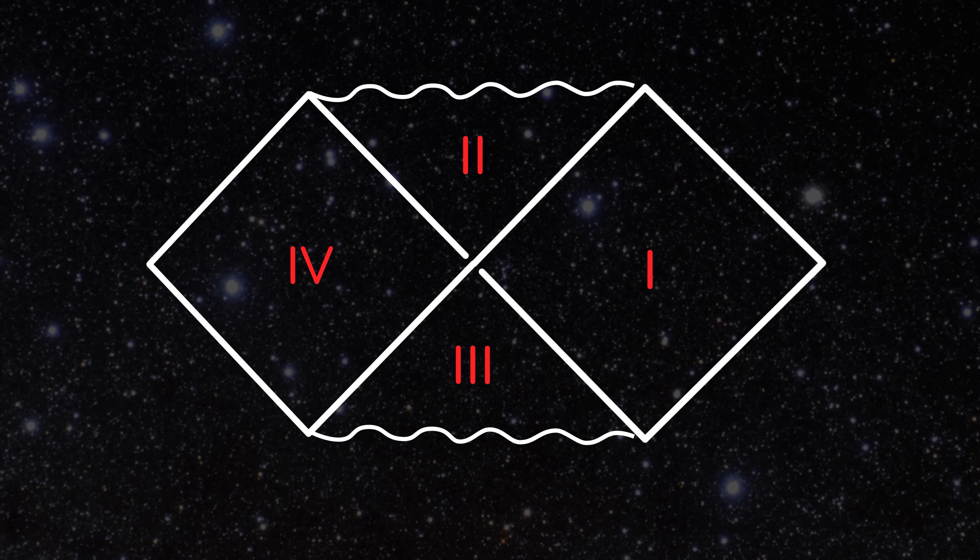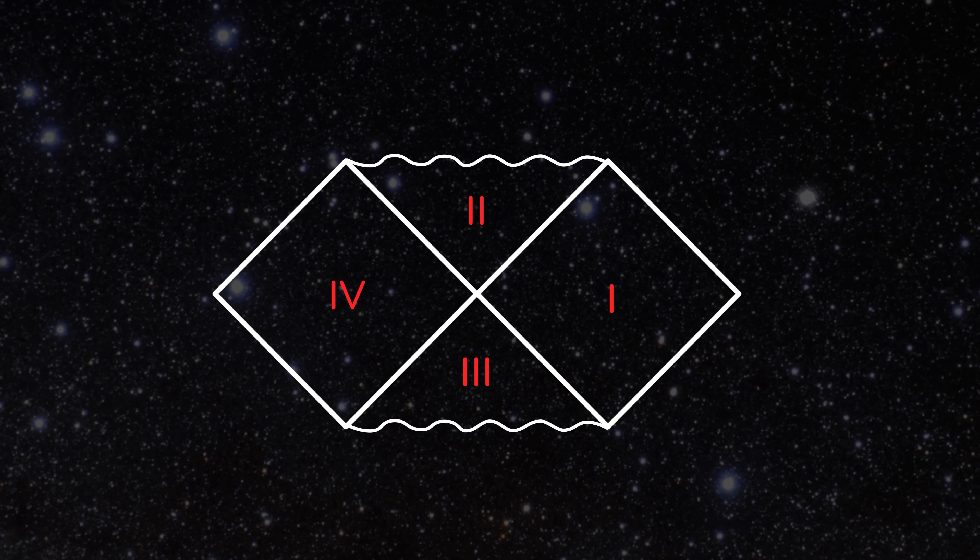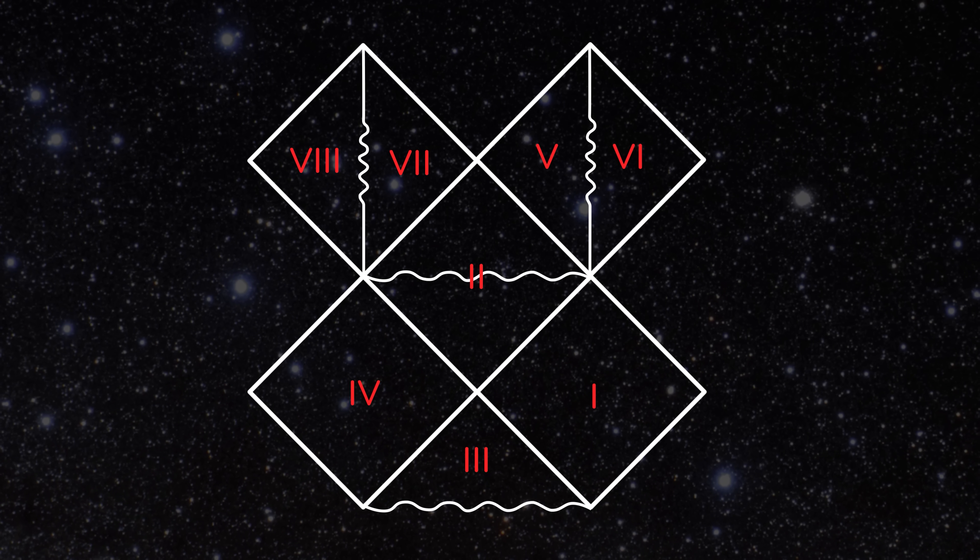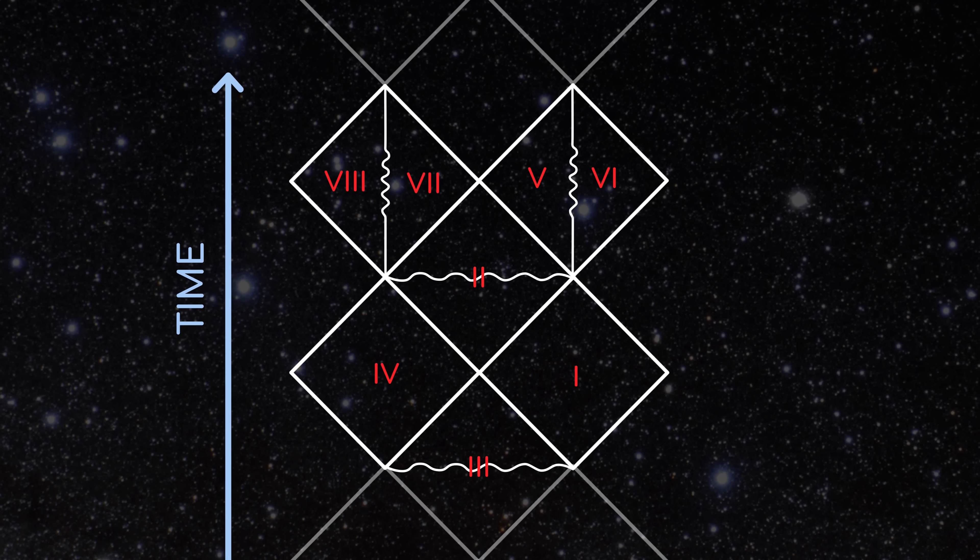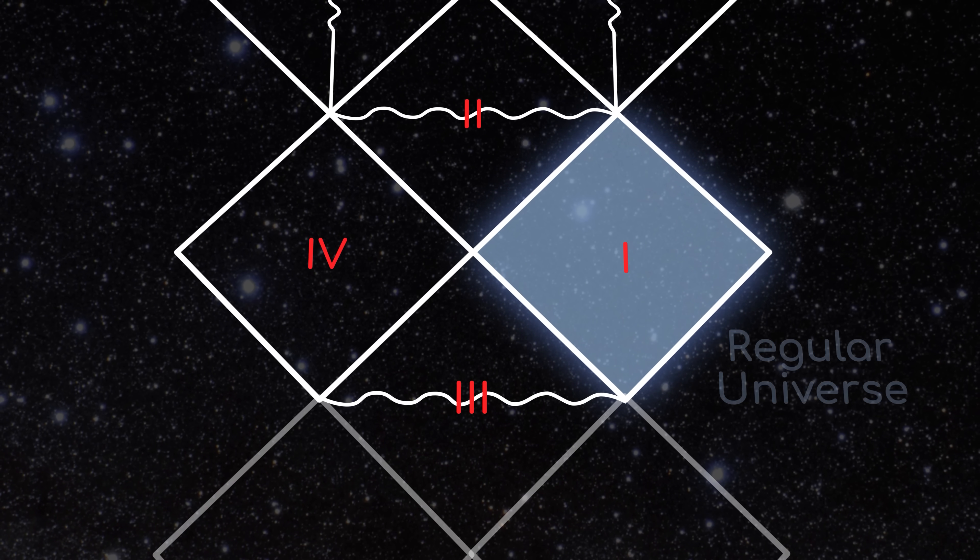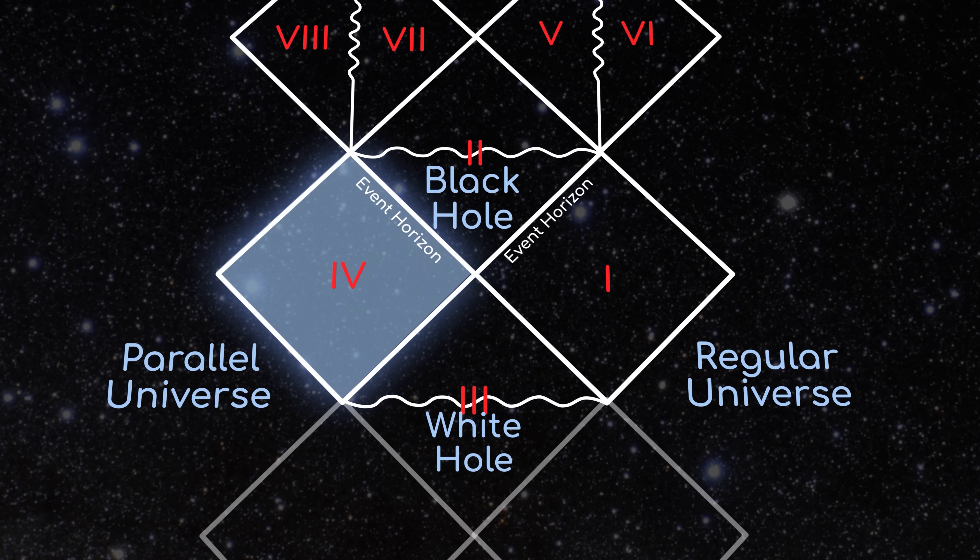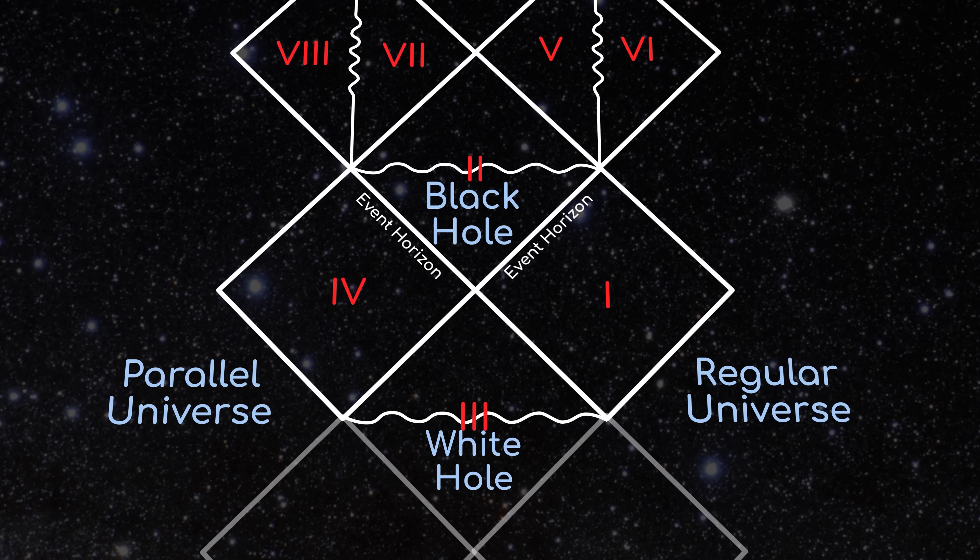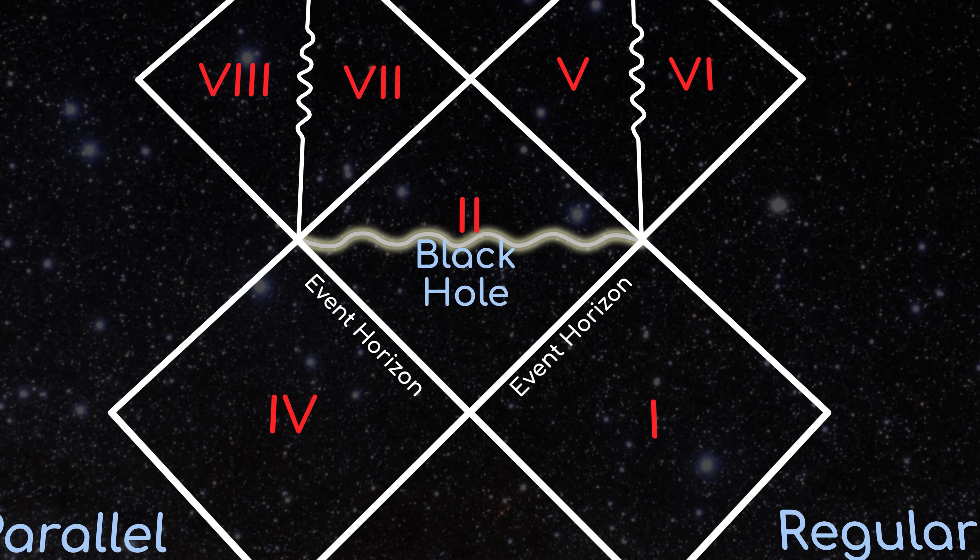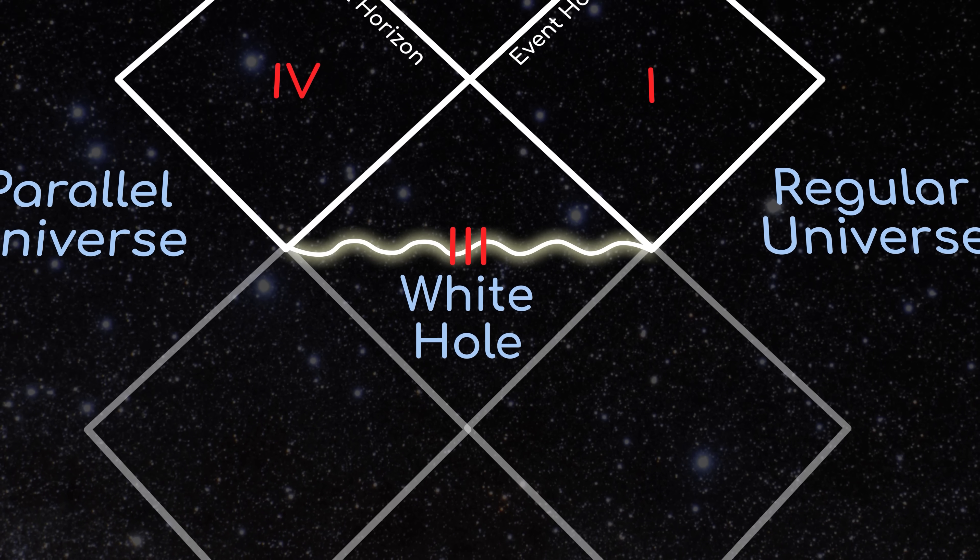Let's have a look at the Penrose diagram for a spinning black hole as an example. Instead of four distinct regions of space-time, there are now eight types of regions that repeat themselves in an infinite pattern of universes. Region 1 through 4 are the same ones we saw before. These are the regular universe, the black hole, the white hole, and the parallel universe. But now that the black hole is spinning, its geometry no longer has an unavoidable singularity in its future, and the white hole similarly loses the singularity that existed in its past.